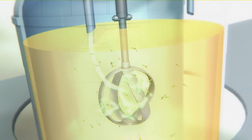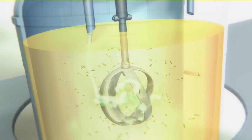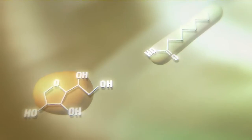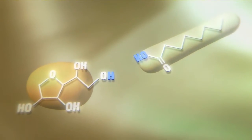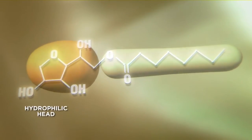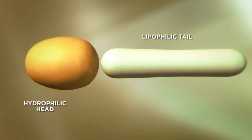With this step, the production process is already complete and no waste products are formed. A Velsan SC molecule has a hydrophilic, water-loving head, the sorbitan, and a lipophilic, fat-loving tail, the caprylate.